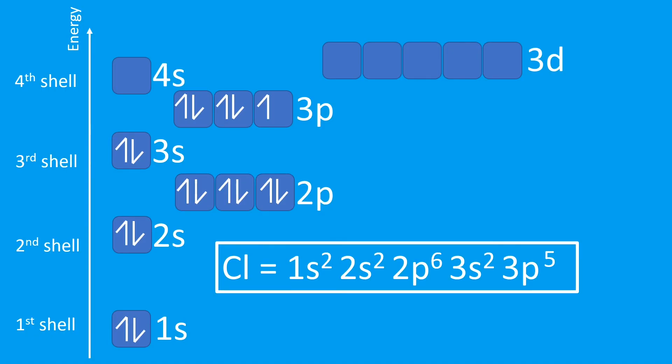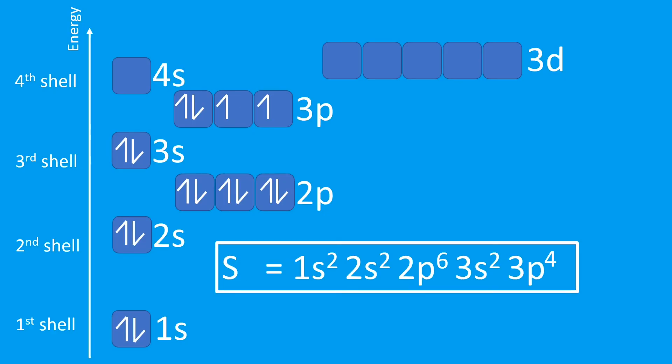Now let's look at something in Group 7: chlorine. Chlorine has the electron configuration 1s² 2s² 2p⁶ 3s² 3p⁵. Being in Group 7, it's going to accept one electron — that electron goes into the 3p orbital, going from 3p⁵ to 3p⁶, and it will have a negative charge: Cl⁻. You might start seeing a pattern here.